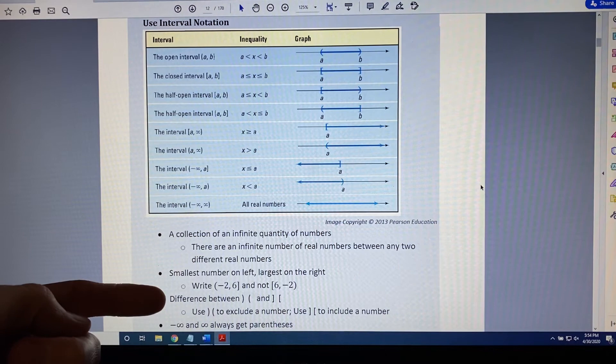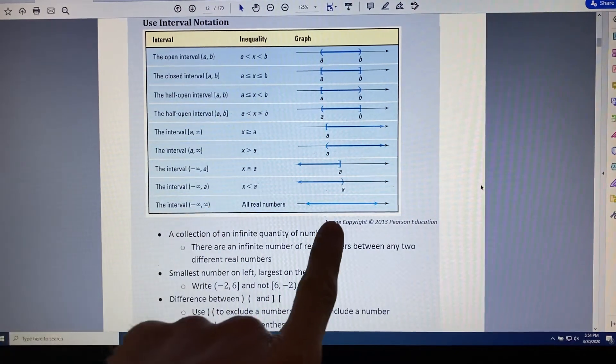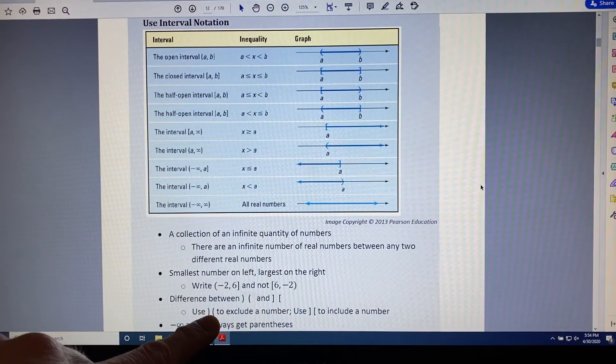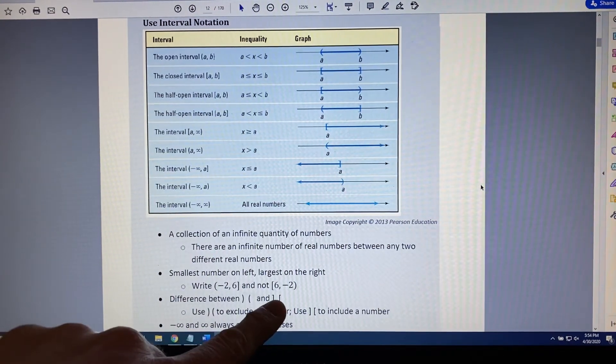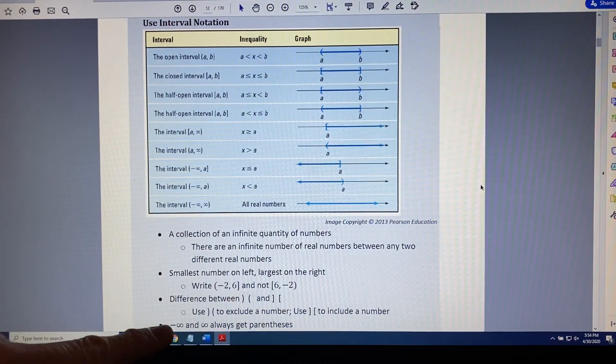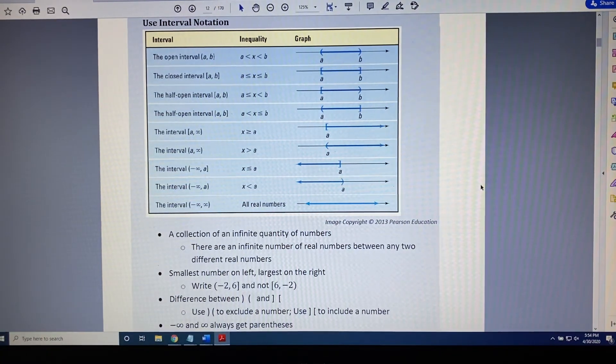Parentheses and brackets mean different things on both an interval and a number line. Parentheses are used to exclude a number, where brackets are used to include a number. And finally, whenever we write parentheses around infinity and negative infinity, what we are indicating is that infinity is a number that cannot be reached and therefore cannot be concluded.